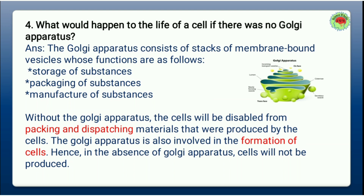Exercise Question 4: What would happen to the life of a cell if there was no Golgi apparatus? The Golgi apparatus consists of a stack of membrane-bound vesicles. Its main functions are: first, storage of substances; second, packaging of substances; and third, manufacture of substances.